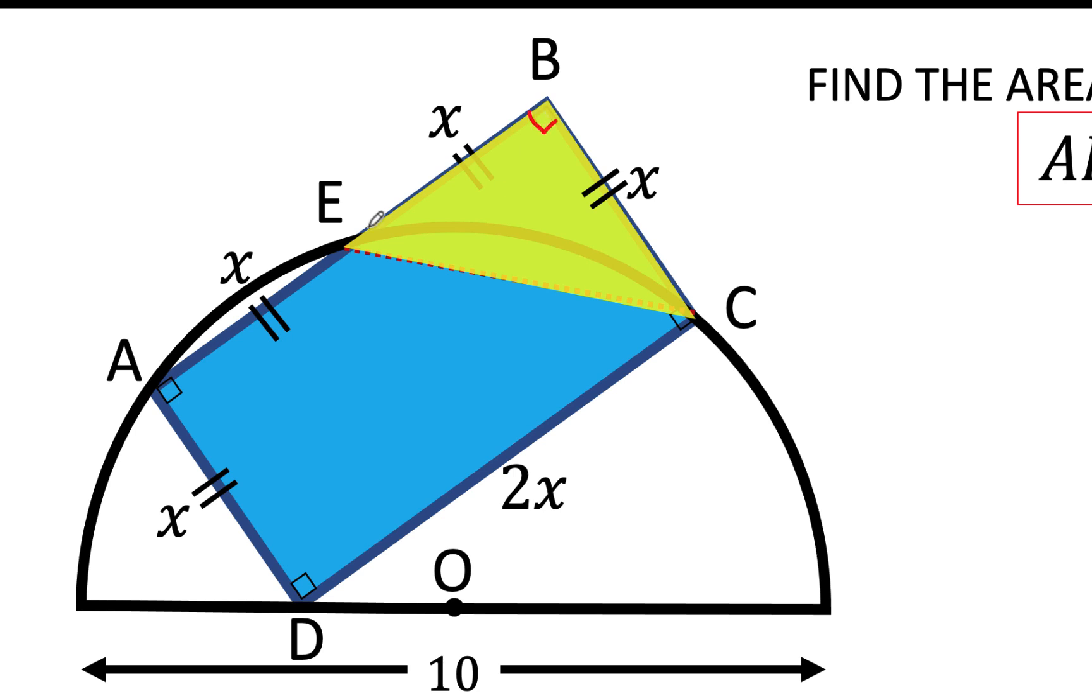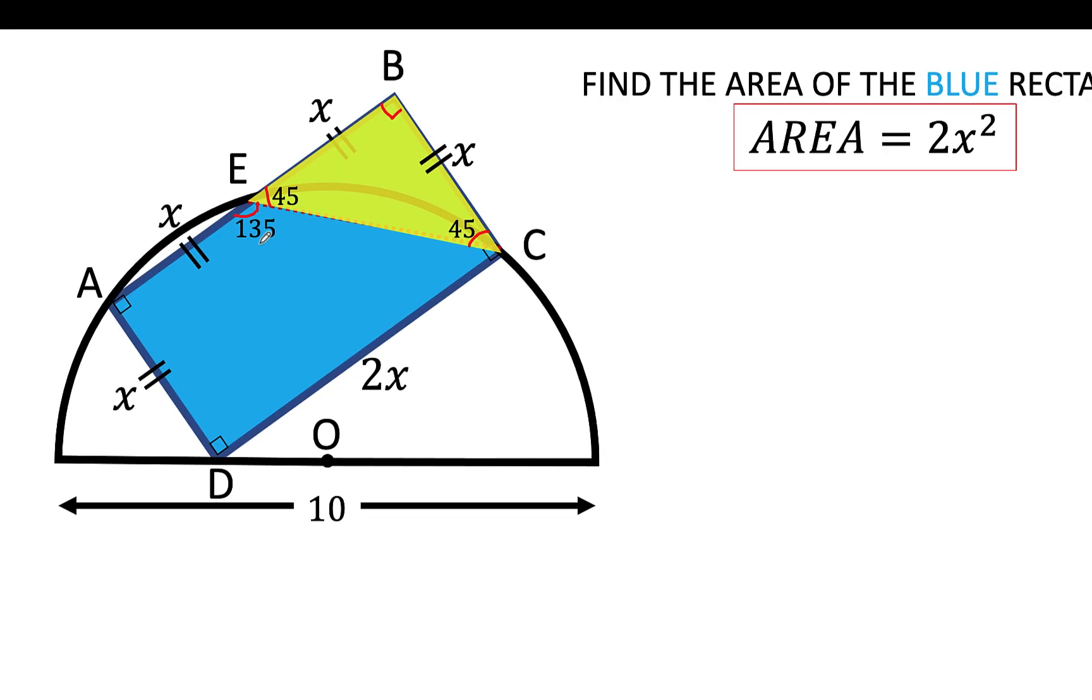So this is 90 degrees here. This angle and this angle are the base angles of this isosceles triangle and they are equal. And both of them are equal to 45 degrees. Now, we have here a linear pair, which means that the measure of this angle is 180 minus 45 or 135 degrees.